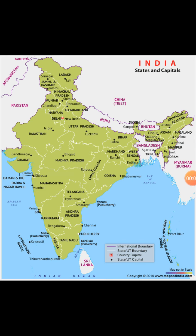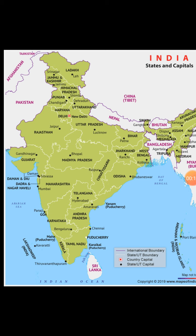In this video we will see Indian states and their capitals, and union territories also. Starting from the union territories, at the top you can see Ladakh, and its capital is Leh. Then Jammu and Kashmir, its capital is Srinagar and Jammu is also a capital — two capitals on the basis of winter and summer seasons.